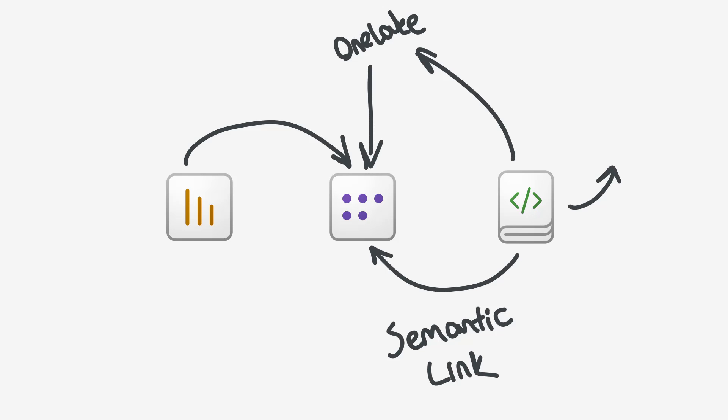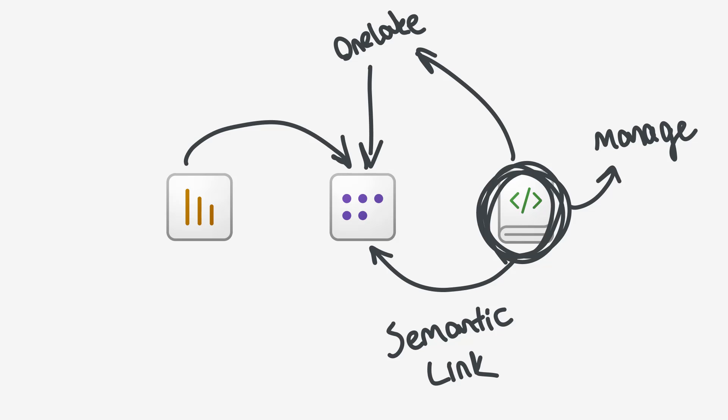Additionally, a notebook can be used to manage items in Fabric. For example, you can create a lakehouse with a notebook, and you can also call the Power BI and Fabric REST APIs. So the notebook is a very important item type in Fabric, and it's something that's very important to be aware of. What we're going to do today is look at an example of semantic link being used to query and explore a semantic model.